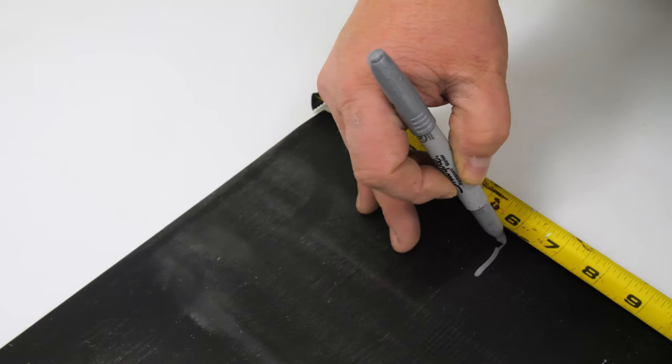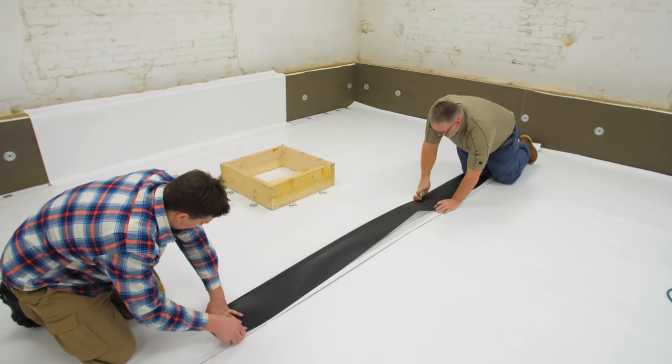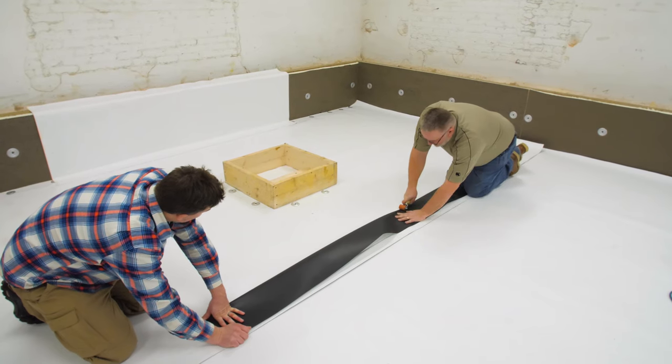Crease the membrane at the angle change location using a 2-inch roller. Creasing the membrane at this transition will help prevent bridging. Do not use heat to create the crease.